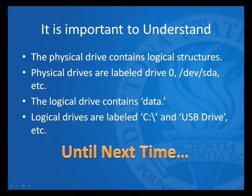And so it's important to understand the physical drive contains logical structures. The physical drives are usually labeled things like drive 0, drive 1, in the Linux world, dev/sda, sdb, etc. Logical drives are normally the parts of the drive that contain data, although data can be written to physical areas not within logical drives. That's a way to hide data. But generally speaking, the data is contained in the logical drives, and we know that we normally view these logical drives with drive letters like C and D and E, etc., or to a particular mount point if we're looking at the Linux or Unix variants.